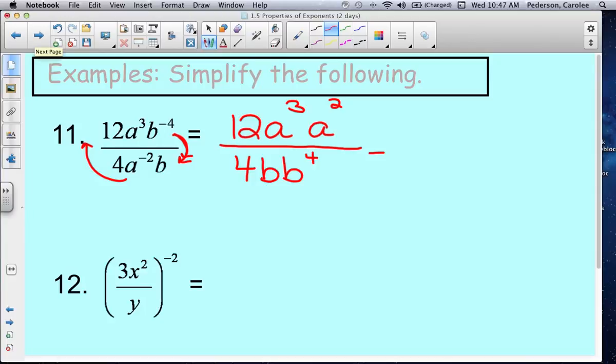First thing we can do is take those a cubed and a squared. Those are the same base, so we can add those exponents. Then the denominator, same thing. We have a b to the 1 and b to the 4th, so that can be b to the 5th.